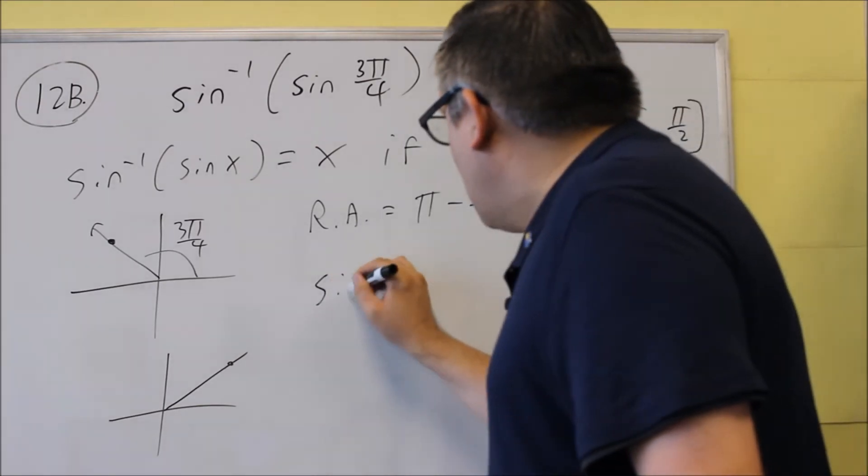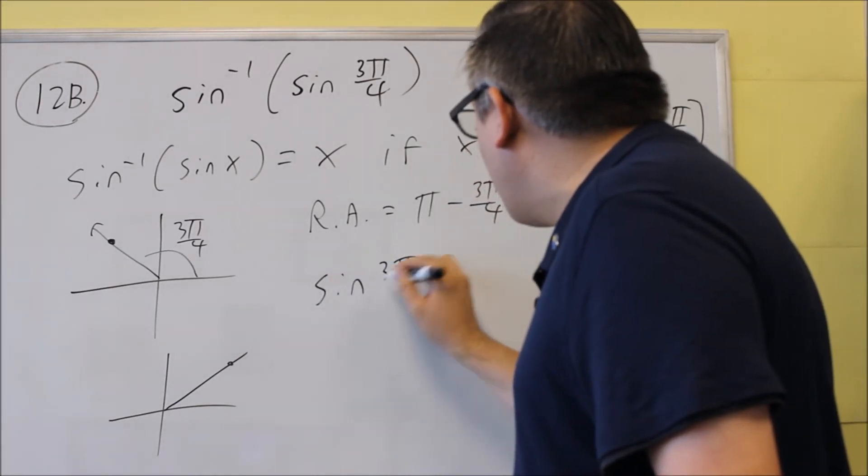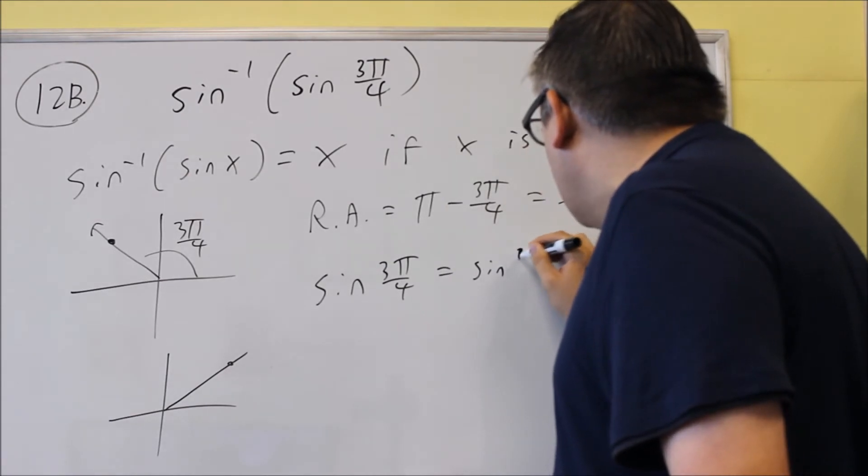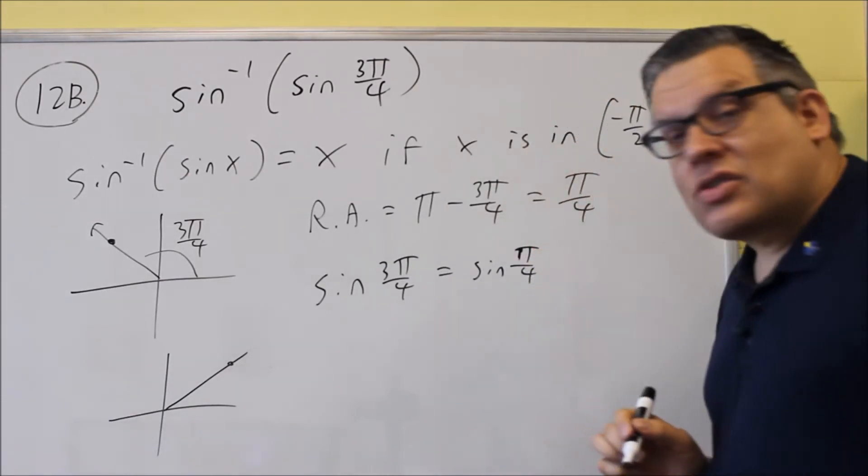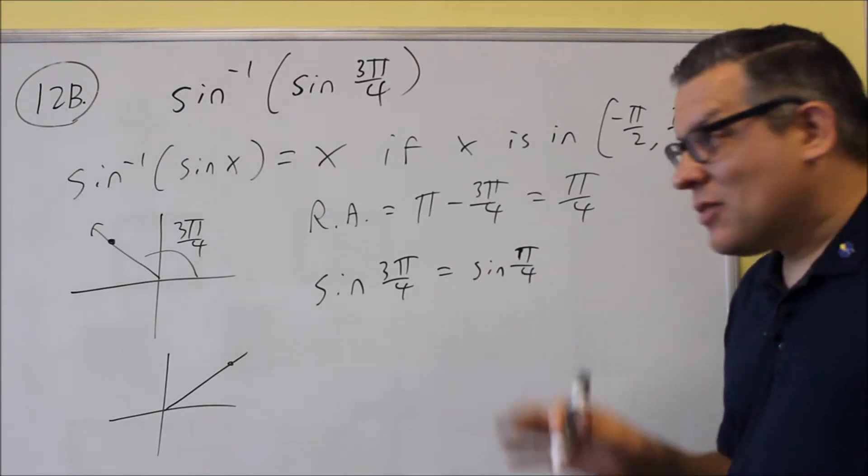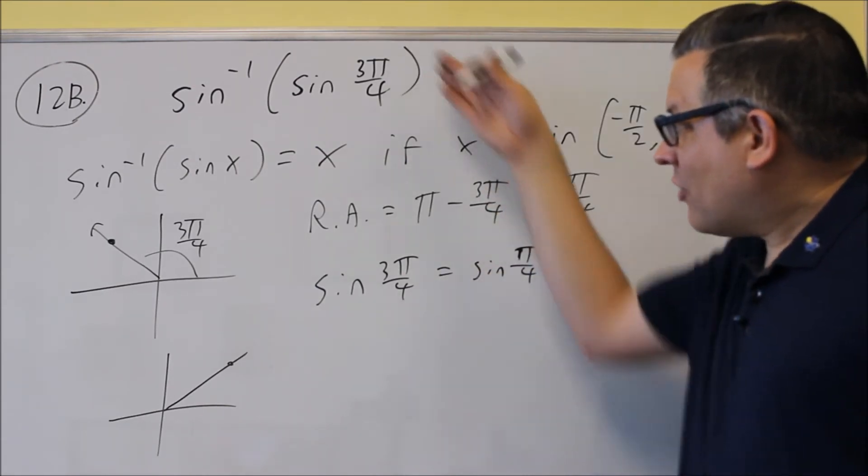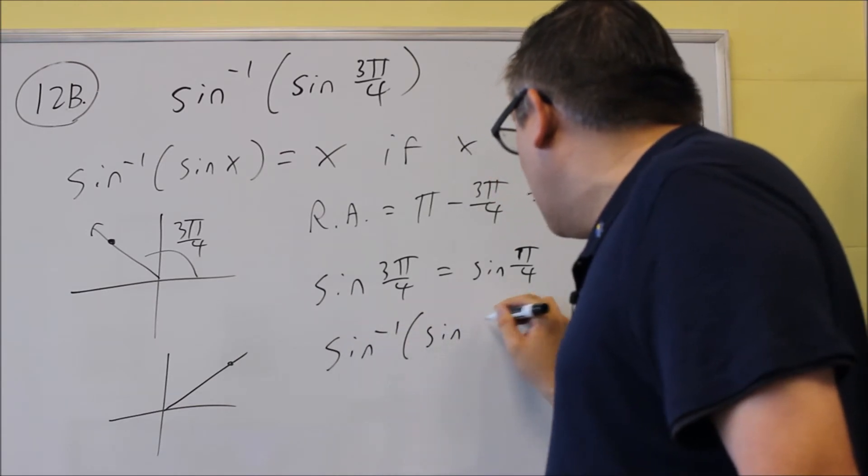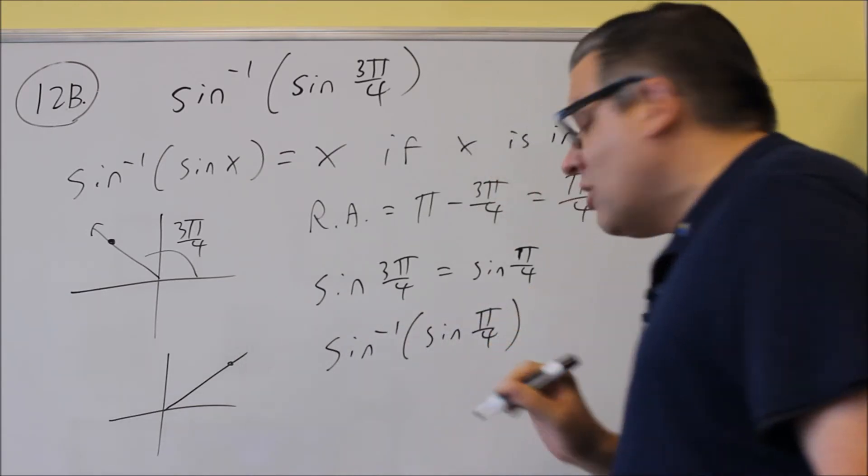So I can say that sine of 3π over 4 is actually going to have the same exact value as sine π over 4. These are both equivalent. So then we can say that instead of 3π over 4, we can do inverse sine of sine of π over 4 instead.